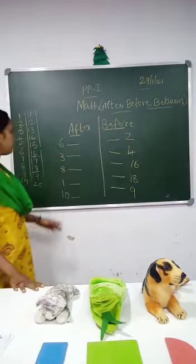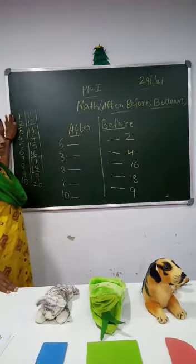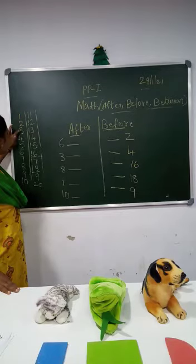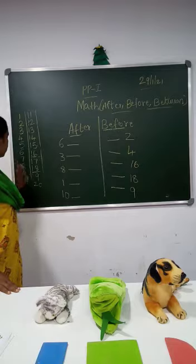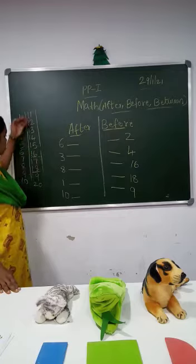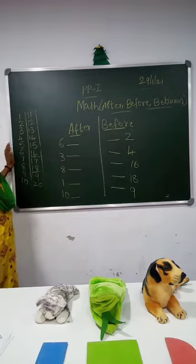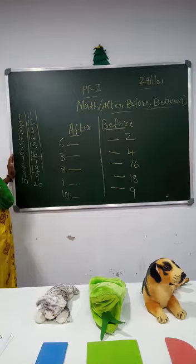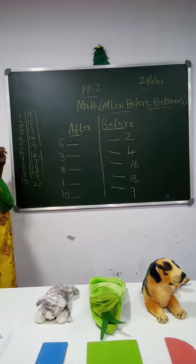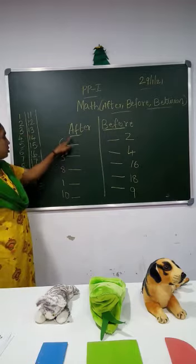After number means forward counting. Forward counting is the after number. Backward counting is before. So in forward counting, numbers come one after the other. We will write from the top. Before number is read going backwards.